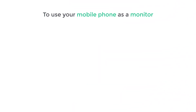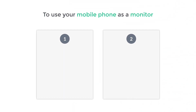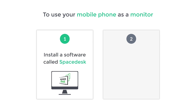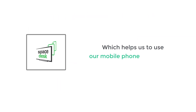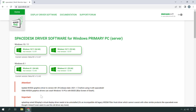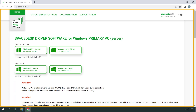Now to use your mobile phone as a monitor, we are going to do two steps. The first step is to install a software called Spacedisk on your computer. This is the software which is going to help us use a mobile phone as a monitor. Now to install the software, just click the link below this video and it'll take you to this site.